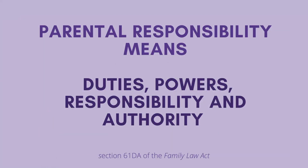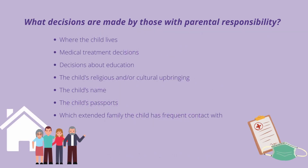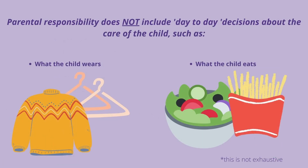Section 61B defines parental responsibility as all the duties, powers, responsibilities and authority which by law parents have in relation to children under 18 years. Examples of parental responsibility include deciding things like where the child lives, medical treatment, education, religious upbringing, the child's name, and the child's passport. Parental responsibility does not include making decisions about the day-to-day care of the child — for example, what the child eats or wears is not included.